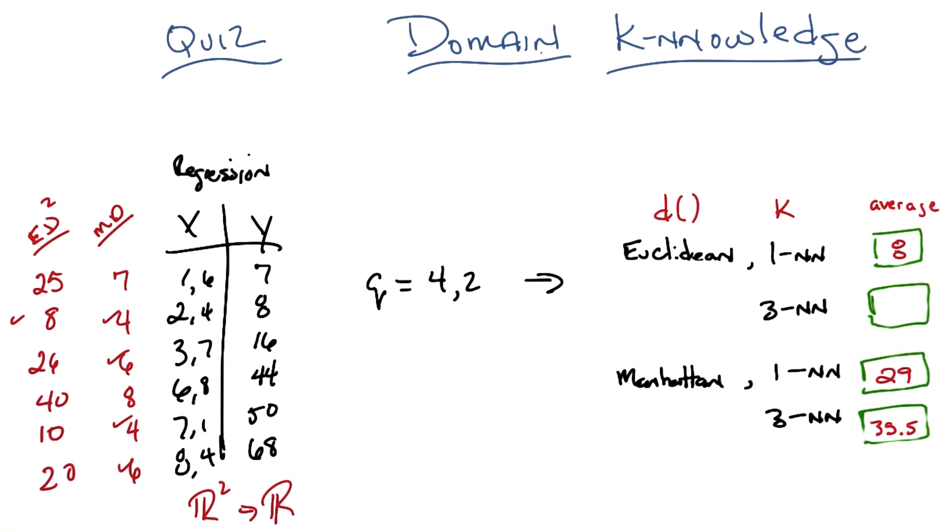And the three closest are 8, 10, and 20. And if we average the Y values for those, that's 8, 50, and 68. Which gives us an average of 42. Ah, the meaning of life, the universe, and pretty much everything. Yes, and that is absolutely correct.